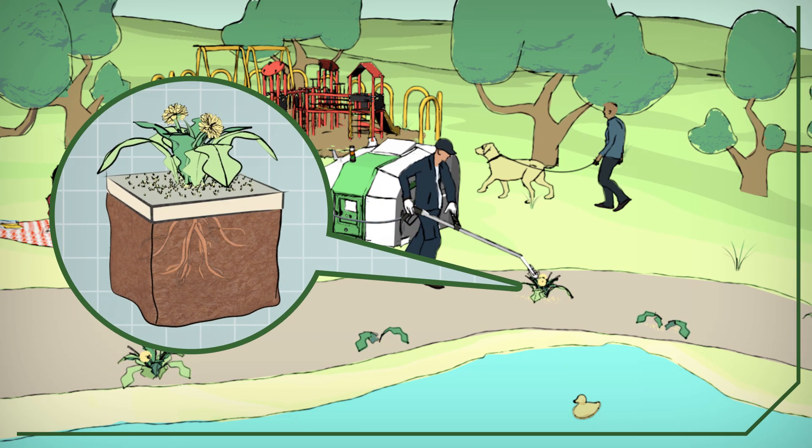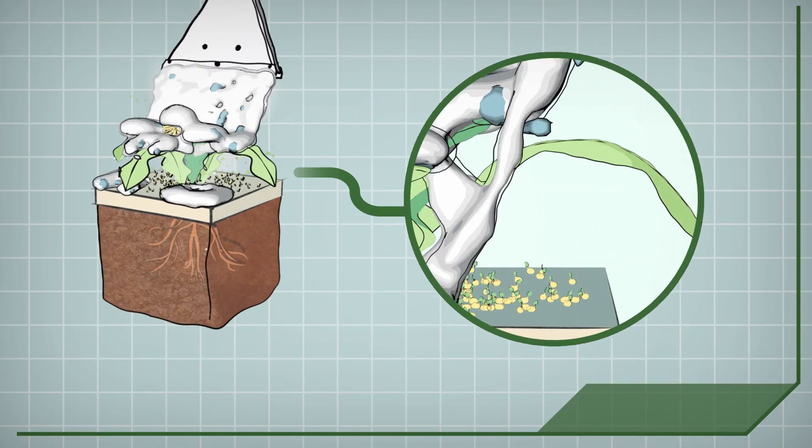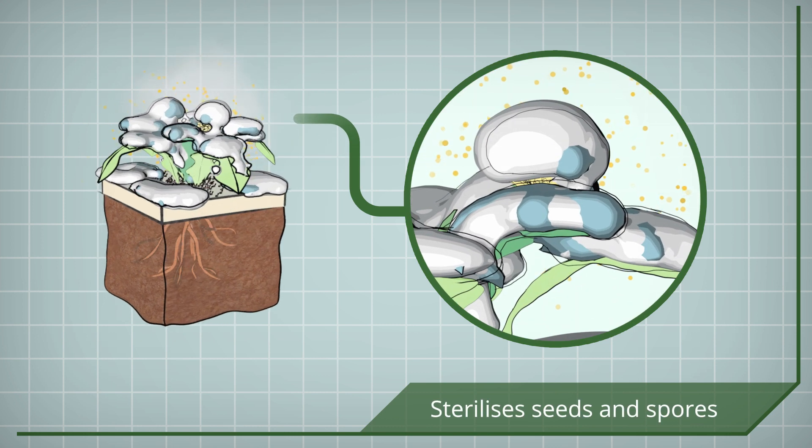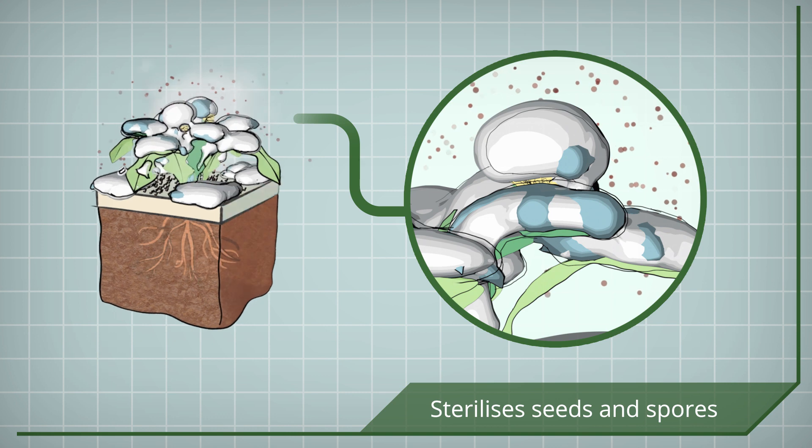The Foam Stream mix flows from the lance, covering the vegetation. Surrounding seeds and spores are sterilized, leading to a net reduction in weed coverage over time.